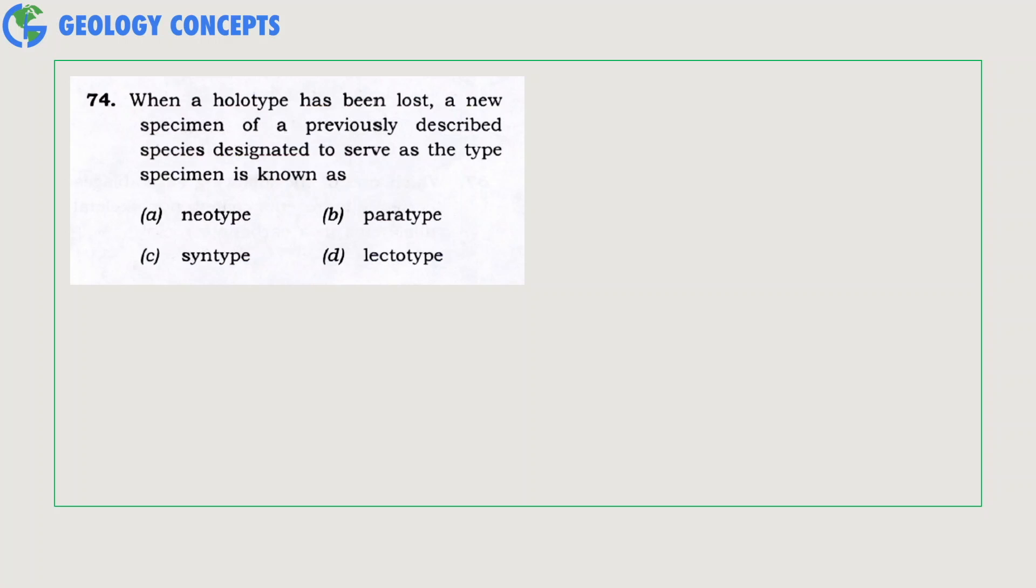When a holotype has been lost, a new specimen of a previously described species designated to serve as the type specimen is known as what: neotype, paratype, syntype, or lectotype? To maintain the nominal stability or solve doubtful or confusing identities, a new specimen of a previously described species is designated to serve as the type specimen by replacing a previously existing holotype which is lost. The new specimen is known as neotype. So option A is the right answer here.